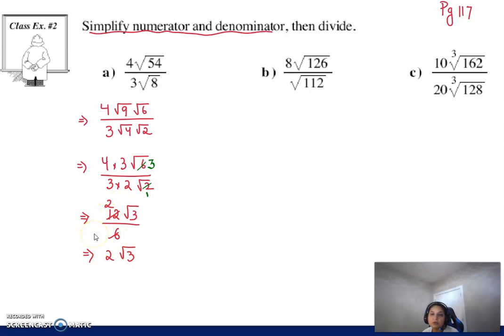So again, we divided numerical coefficients with numerical coefficients and radicand with radicand. The only difference in this example was we had to first simplify them.